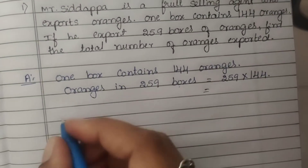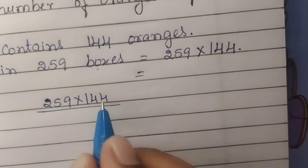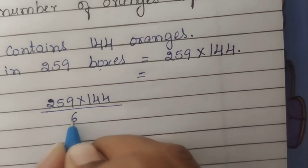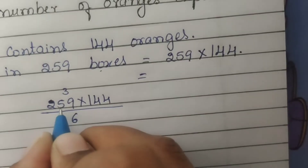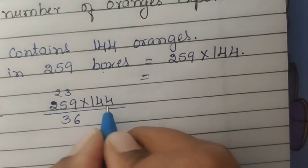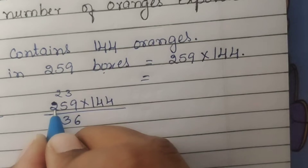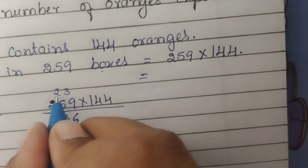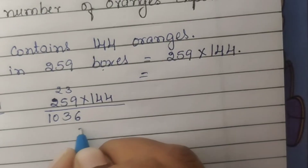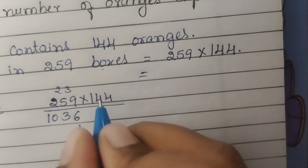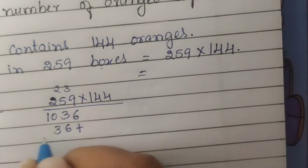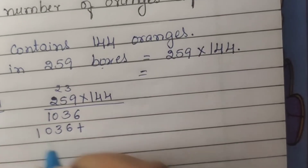259 into 144: 4 nines are 36, so write 6 and carry 3. 4 fives are 20, 20 plus 3 is 23, so write 3 and carry 2. 4 twos are 8, 8 plus 2 is 10. Then adding the same row: 1 nine is 9, 1 five is 5, 1 two is 2, giving partial products 1036 and 259.